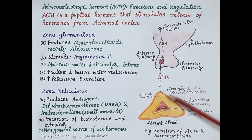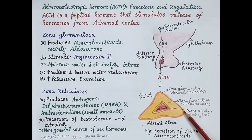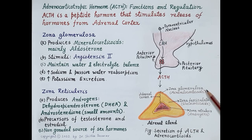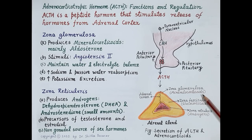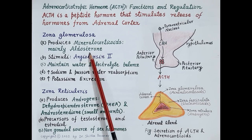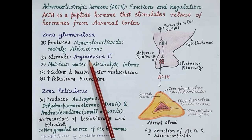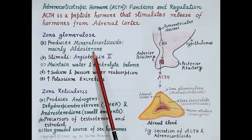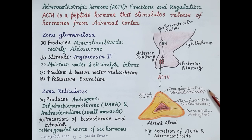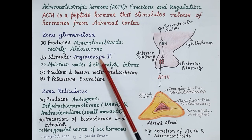Now let's focus on the adrenal cortex, which is stimulated by adrenocorticotropic hormone. The adrenal cortex is made up of three layers. The thin outermost layer is called zona glomerulosa — it produces a type of steroidal hormones called mineralocorticoids. The most important hormone produced here is aldosterone. Angiotensin II is the most important stimulus that regulates synthesis of aldosterone from zona glomerulosa.